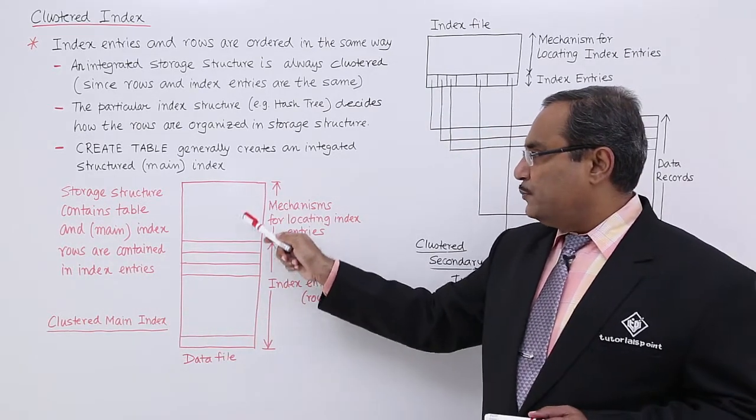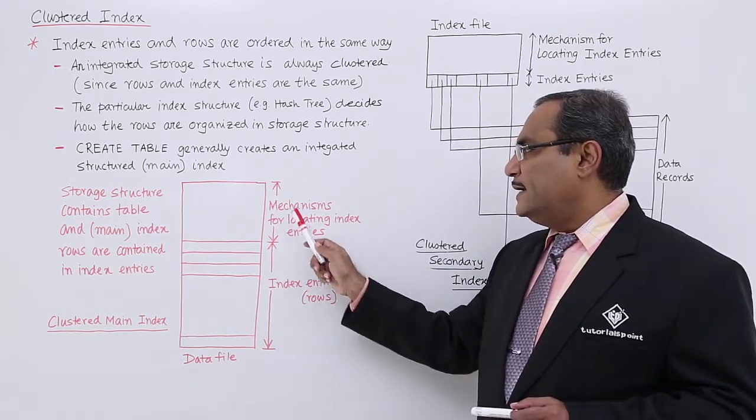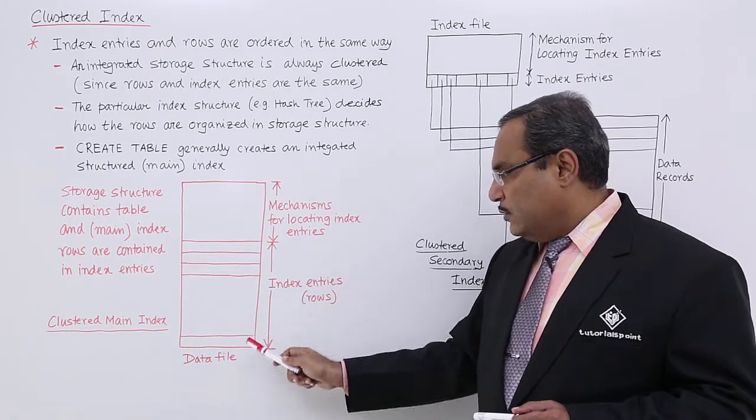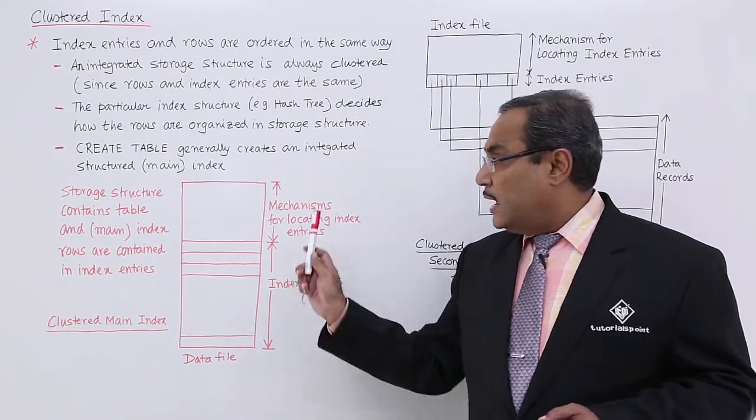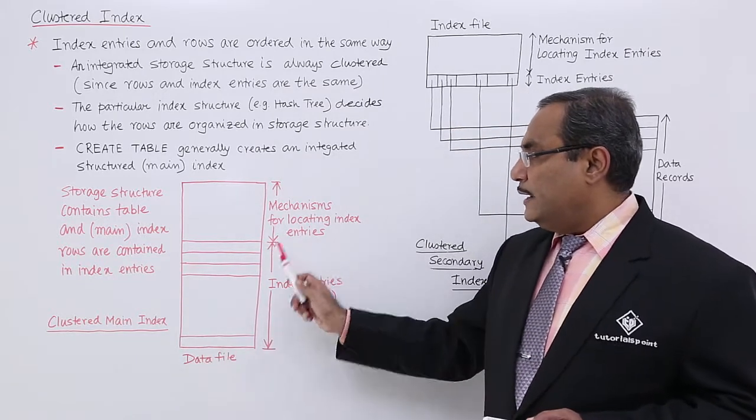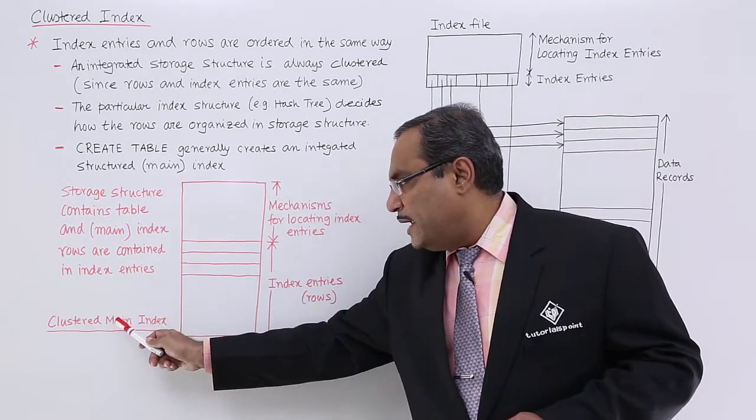In the storage structure, the main index rows are contained in the index entries. This is the portion where the indexing is kept, with mechanisms for locating the index entries. The index entries are nothing but the rows, and they're available in a data file. That's why it's called a clustered main index.